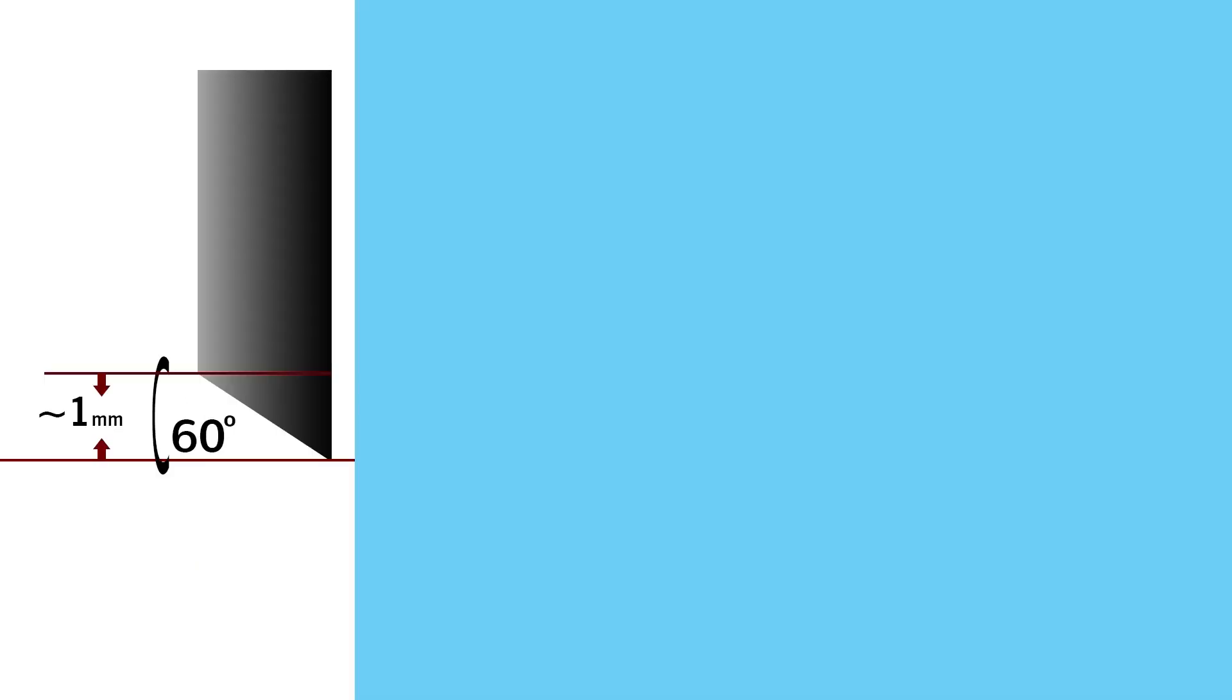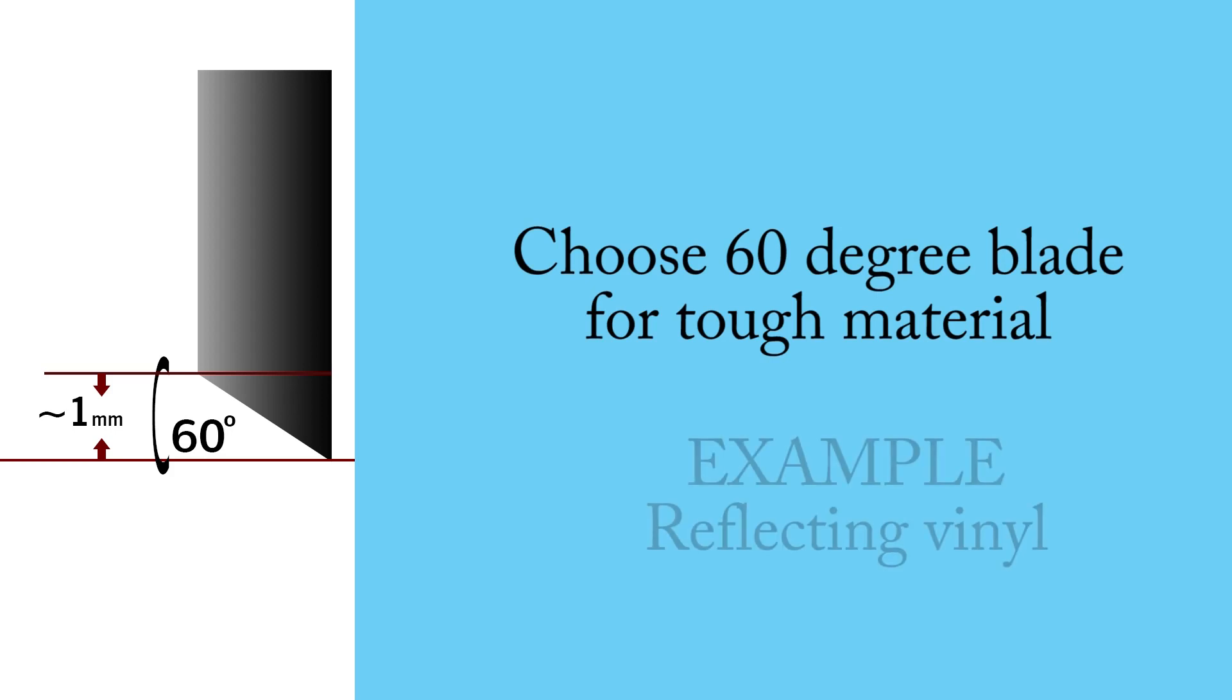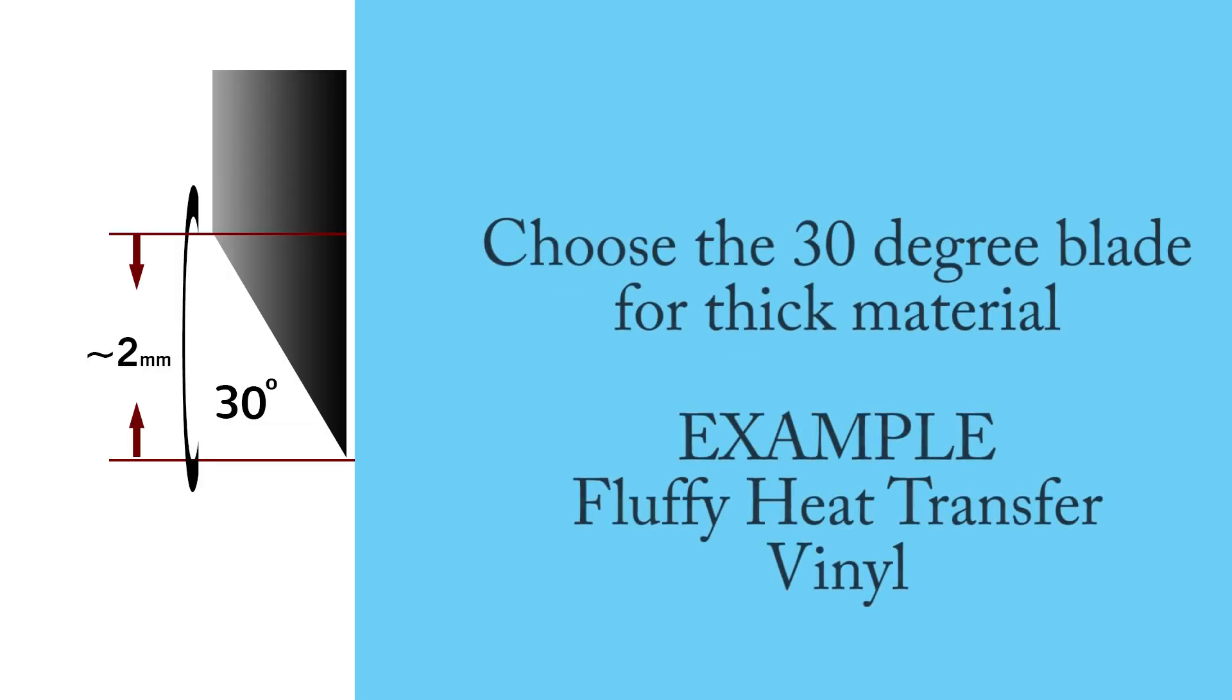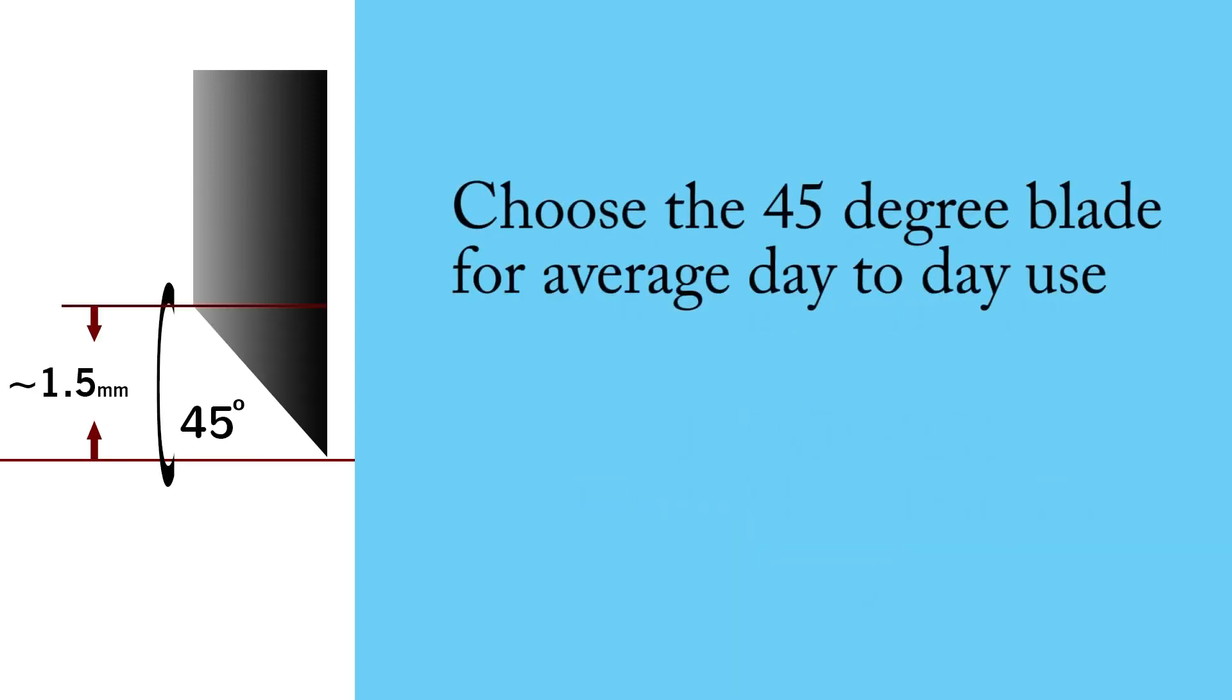So if you have a tough material, choose the 60-degree blade, for example for reflective vinyl. For thick material like fluffy heat transfer vinyl, choose the 30-degree blade, and for average day-to-day use you can use the 45-degree blade.